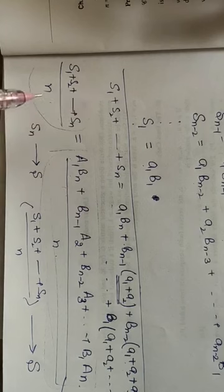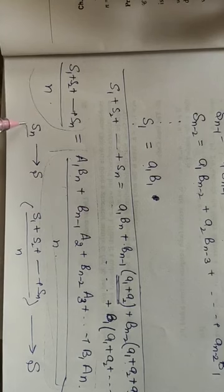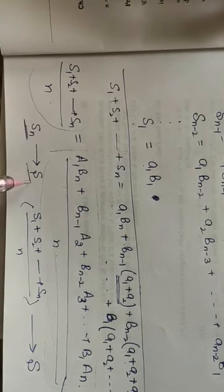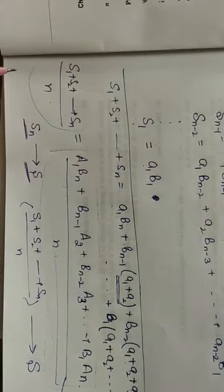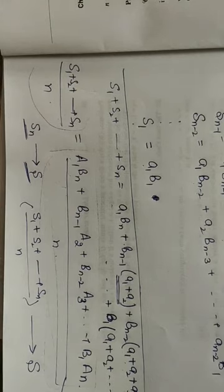This means the sequence of partial sums S_n converges to A times B. This completes the proof of Abel's theorem. In the next lecture we will do problems on these two theorems. Thank you very much.